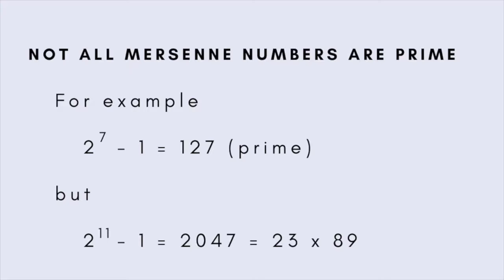But this pattern breaks down for n equal to 11, because 2 to the 11 minus 1 is 2047, which equals 23 times 89.